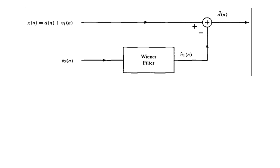In a practical case, this block schematic is focused on the stationarity assumption, which needs to be avoided. In the practical sense we have non-stationarity, and the required statistics of v2(n) and v1(n) are generally unknown. Therefore there should be an alternative way to design the filter. The alternative to the Wiener filter is the consideration of an adaptive type of noise canceller.